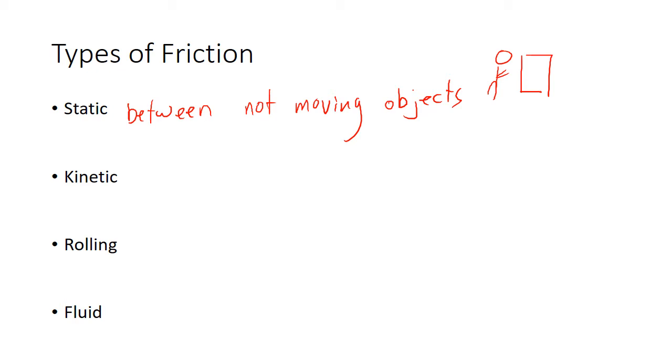As opposed to kinetic, which is between things that slide. After the box is moving and you're sliding it down the hallway, now you're having kinetic friction. So static is before it's moving, and kinetic is after it's moving.